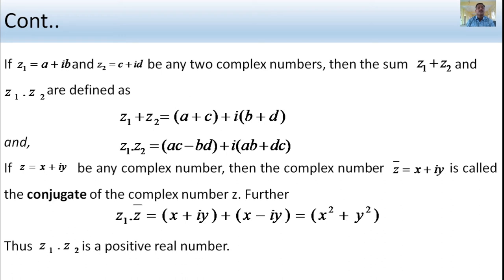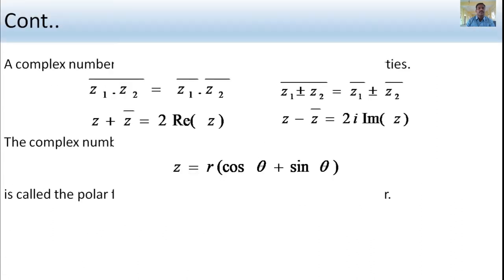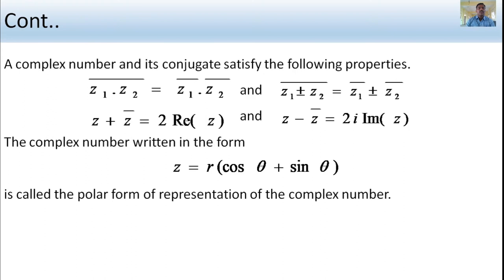The multiplication of z into z-bar equals (x plus iy)(x minus iy) equals x squared plus y squared, which is a positive real number.